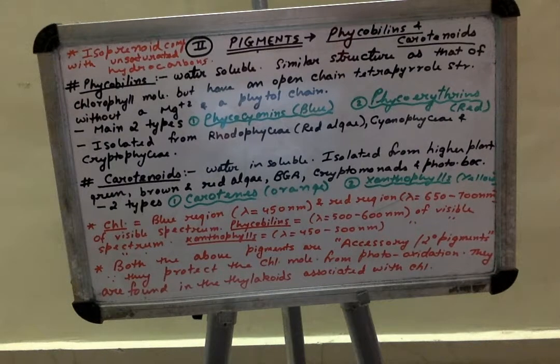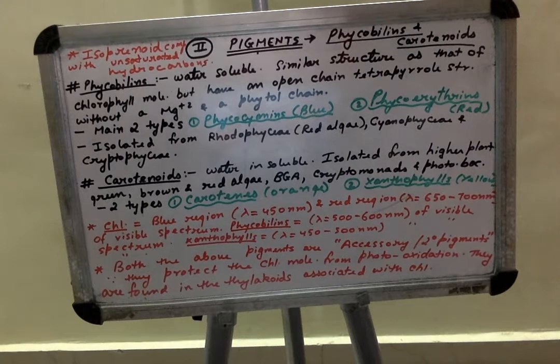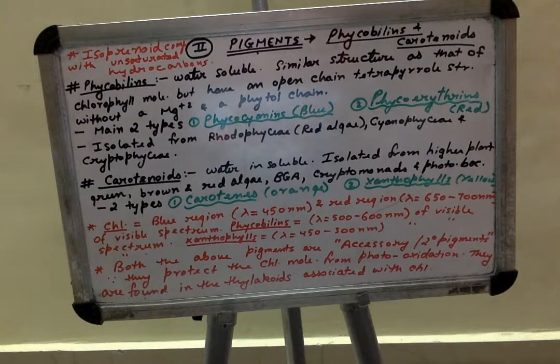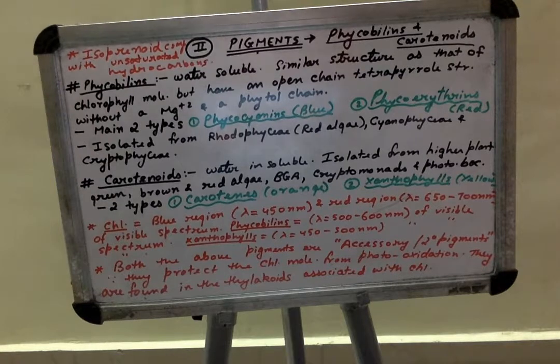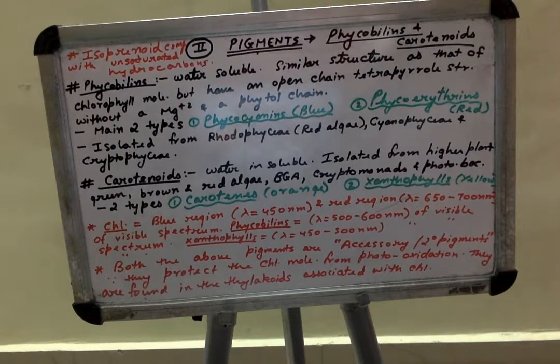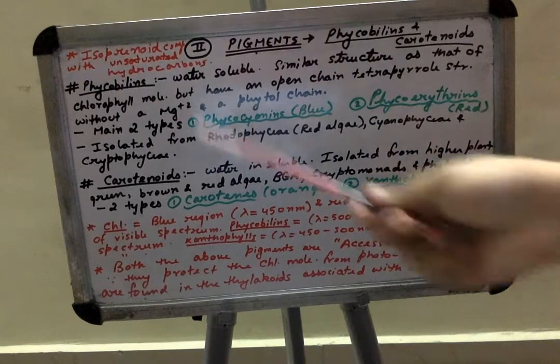This is the continuation part of the pigments present in chloroplasts. The first one was chlorophyll, and here the two main pigments apart from chlorophyll are phycobilins and carotenoids. The first one is phycobillin.